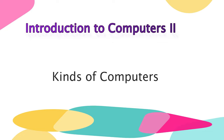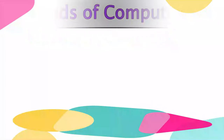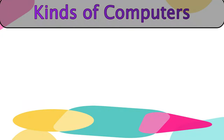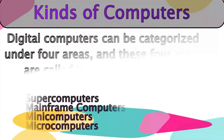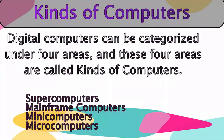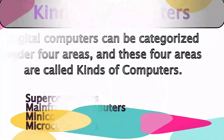Kinds of computers — let's get started. You remember one type of computers we learned was digital computers. The kinds of computers we're learning today are all digital computers. We have four kinds of computers: they are supercomputers, mainframe computers, mini computers, and micro computers.